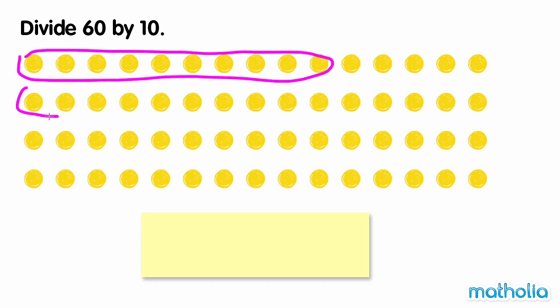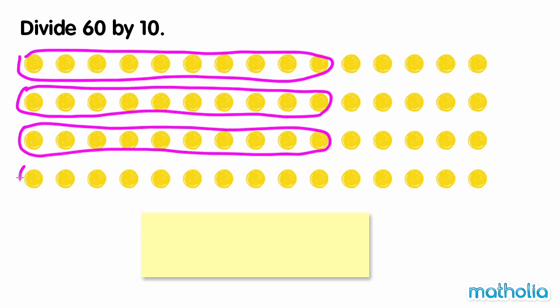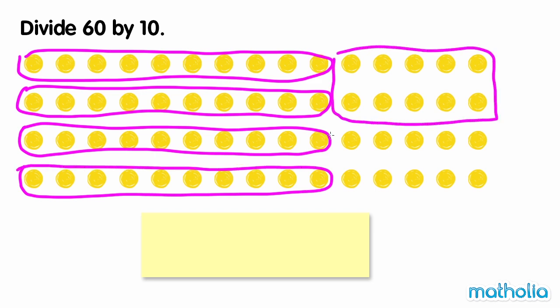1 group, 2 groups, 3 groups, 4 groups, 5 groups, 6 groups. There are 6 groups of 10 dots. So 60 divided by 10 equals 6.